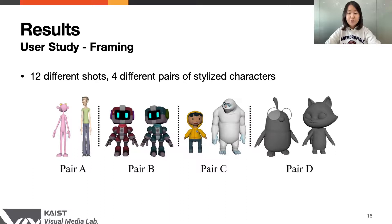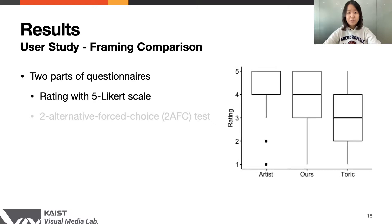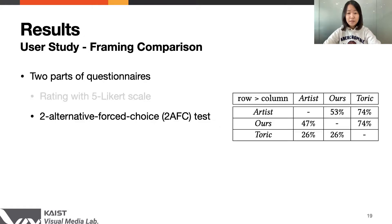To evaluate user satisfaction on camera layout after framing optimization, we conducted a user study on 12 different shots taken with four different pairs of stylized characters. Layouts are generated using three different methods: artist's manual work, our method, and the previous method. The study consists of two parts. Users were first asked to rate how well the generated layout matches the reference on a five-point Likert scale. The results show that layouts generated by our method are comparable with those generated by the artist. Then, two-alternative forced-choice tests were conducted, asking users to pick the better of two results. Users preferred our results over those of the previous method and showed similar preference with the artist's work.